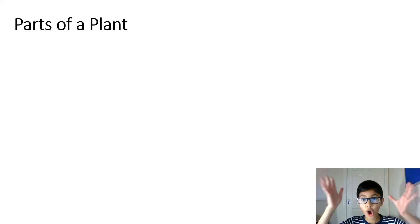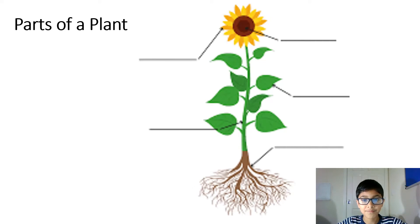Parts of a plant. There's a flower, a leaf, roots, stem and can you name the last one? Petal.